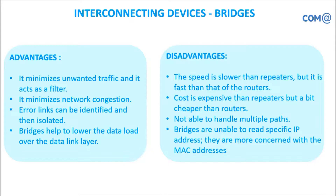Disadvantages of bridge: the speed is slower than repeater but faster than routers because it does a very specific process of sending data from source to destination. Cost is more expensive than repeaters but cheaper than routers — since it has advanced technology compared to repeater, it is costlier, but compared to router, it is cheaper. It cannot handle multiple ports — it will handle only a very limited number of ports.